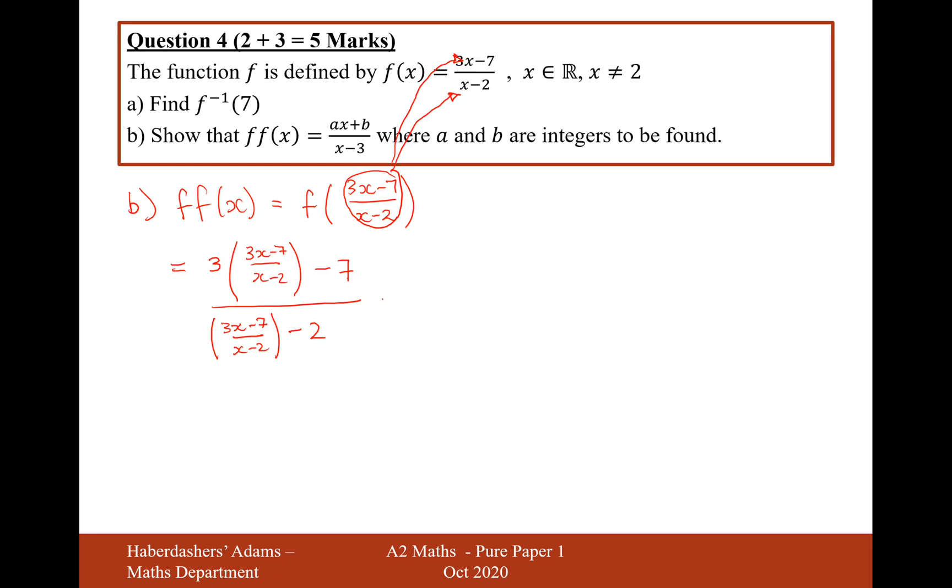Okay, so what we're going to do here to simplify it going forwards is we're now going to straight away times the top and bottom by x minus 2. That's going to make life so much easier for ourselves.